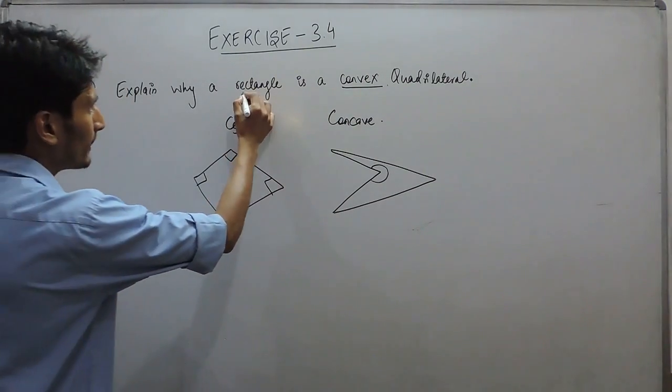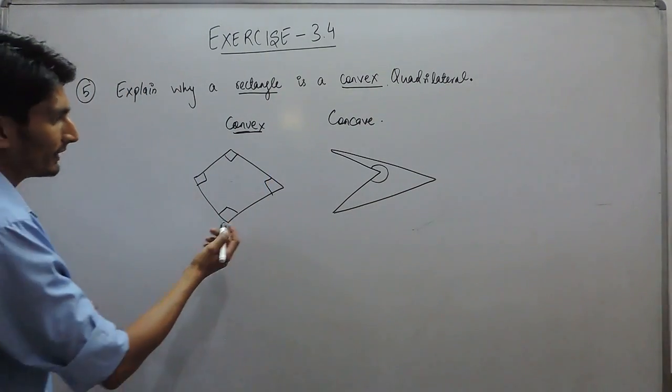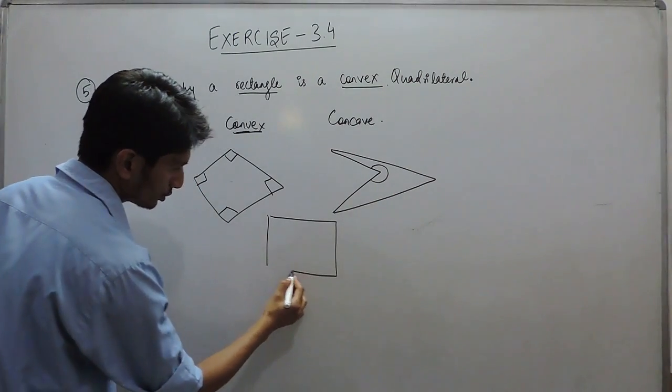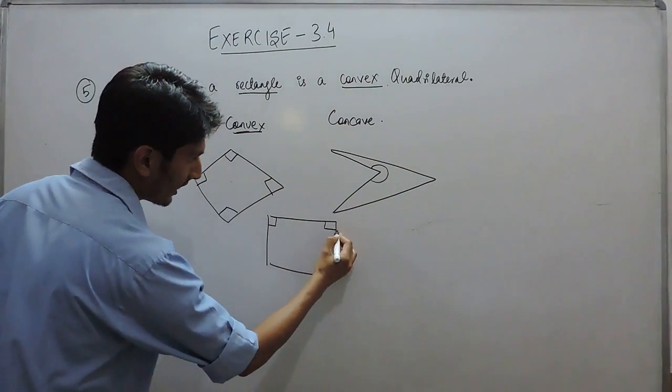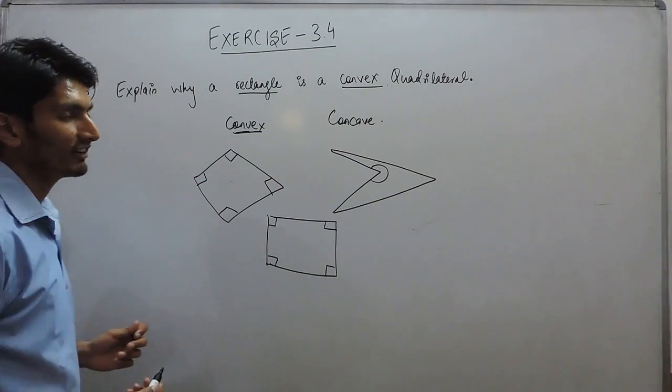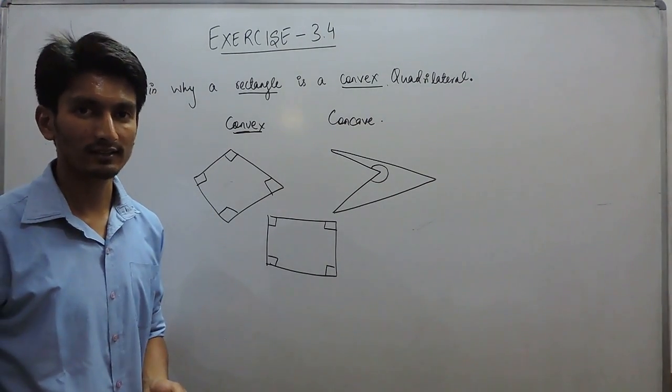Now you have to explain why a rectangle is a convex polygon. Simply, we know that a rectangle is a figure whose all angles are equal to 90 degrees, which are less than 180. So clearly, a rectangle is a convex quadrilateral.